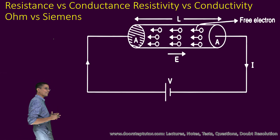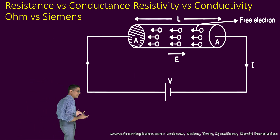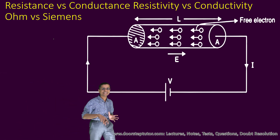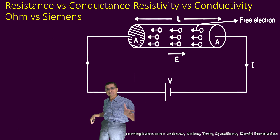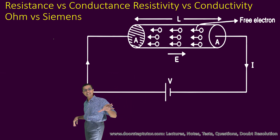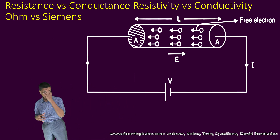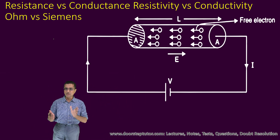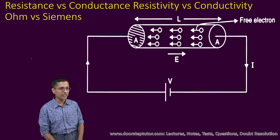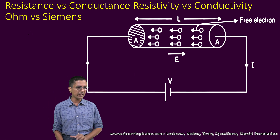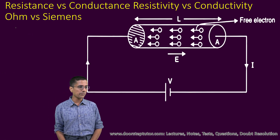Students are often confused by these related terms: resistance, conductance, resistivity, conductivity, Ohm, and Siemens. Let us clarify all of these terms once and for all, so that we are never confused.